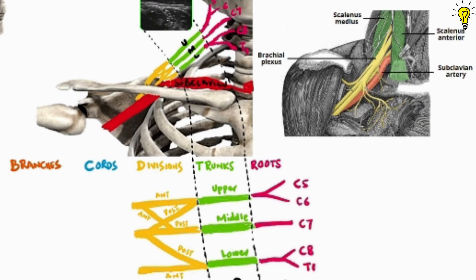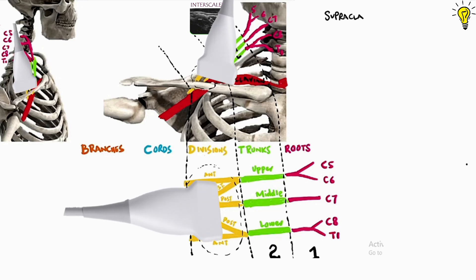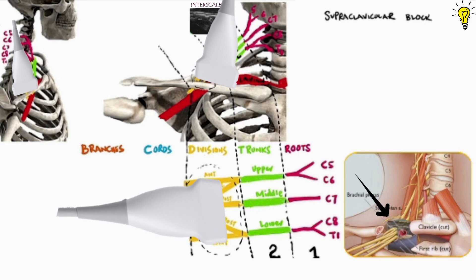If we remove the clavicle to see more clearly how these divisions lie lateral and above subclavian artery. So let's place ultrasound in supraclavicular area now and see how it looks in ultrasound screen. In lower diagram again, you can see how ultrasound waves dissect through the divisions at this level.